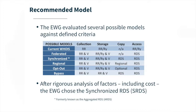The key for the EWG in our analysis was that across all these models, the RDS remained the authoritative source providing authenticated gating and logging access. At the end of the day, whatever model we recommended should remain distributed in architecture, with data located in multiple databases across multiple data centers.